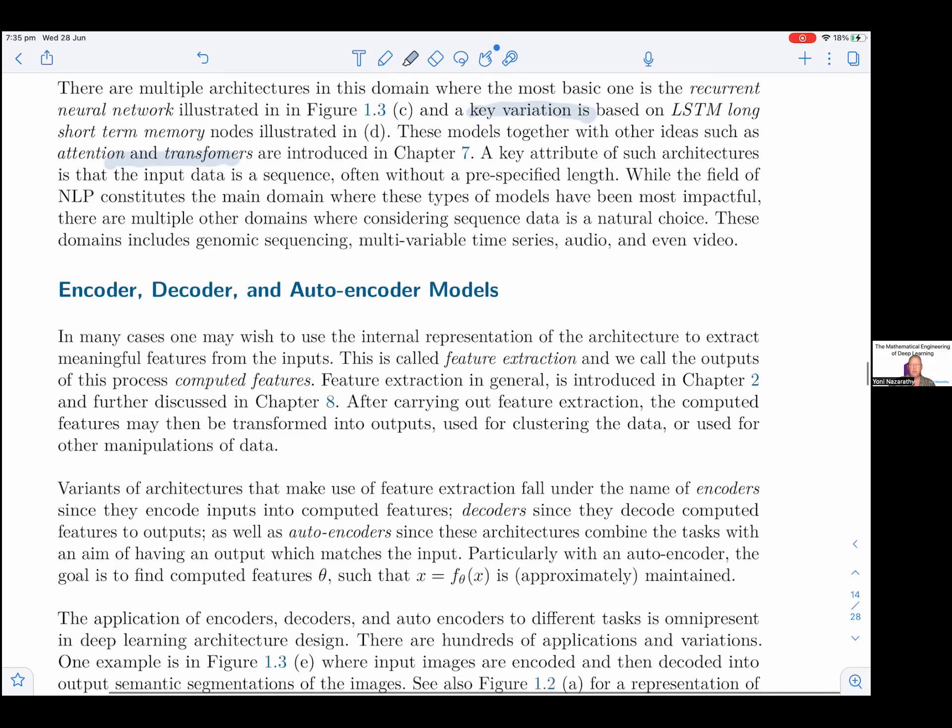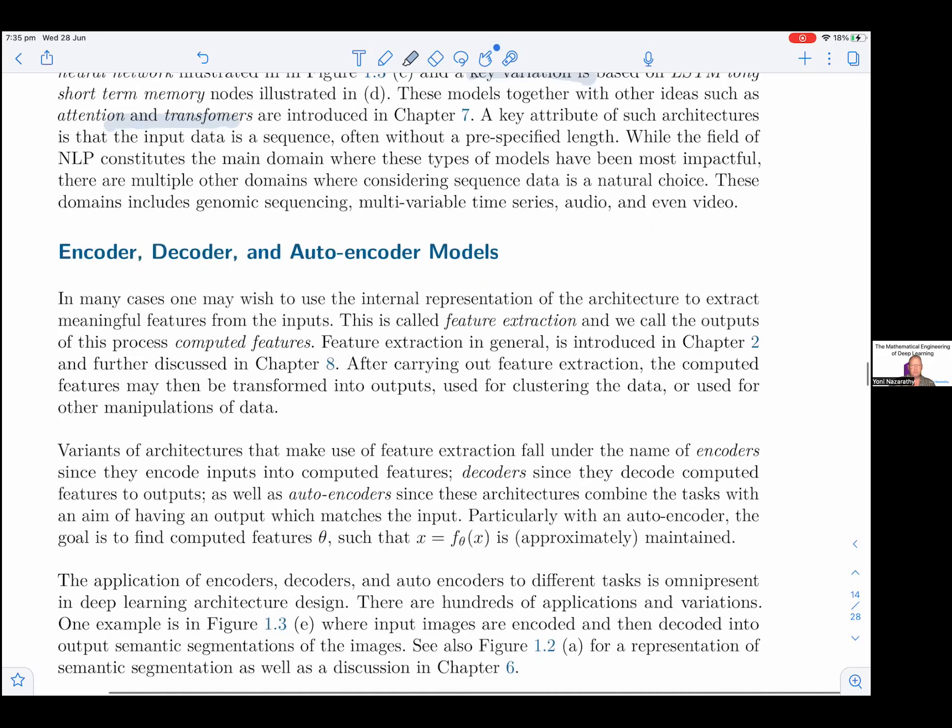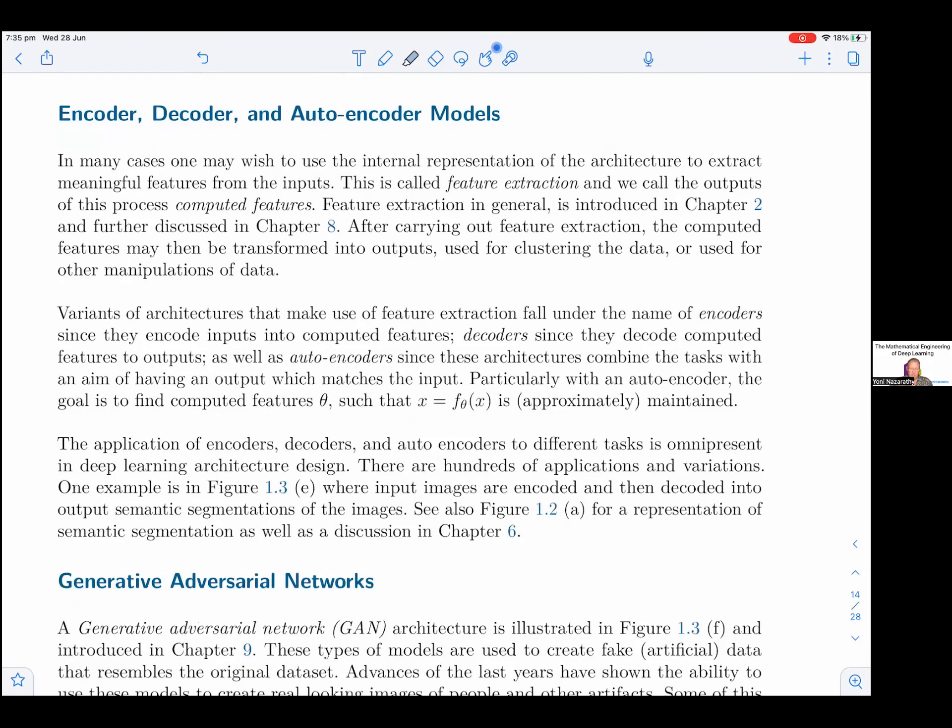Encoder, decoder, and autoencoder models. In many cases, one may wish to use the internal representation of the architecture to extract meaningful features from the inputs. This is called feature extraction, and we call the outputs of this process computed features or sometimes derived features. Feature extraction in general is introduced in chapter 2 and further discussed in chapter 8. After carrying out feature extraction, the computed features may then be transformed into outputs used for clustering the data or used for other manipulations of data.